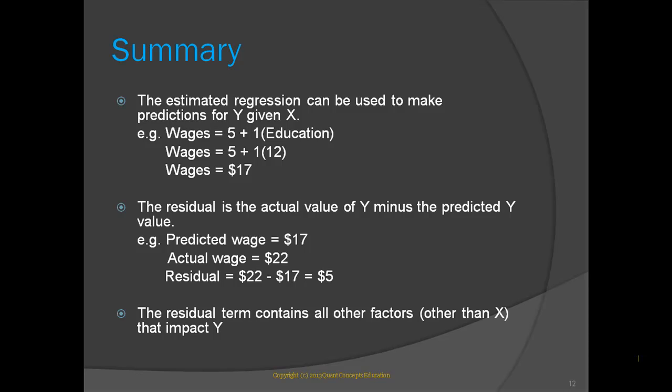In the case of wages and education, our regression model did not include the person's experience, IQ, height, ability to network, or whether he's a kleptomaniac. These factors are thus included in the residual and will prevent our predictions from being perfectly accurate.